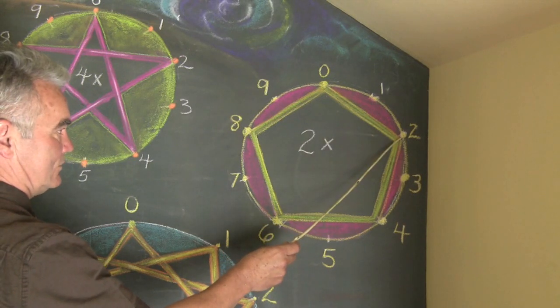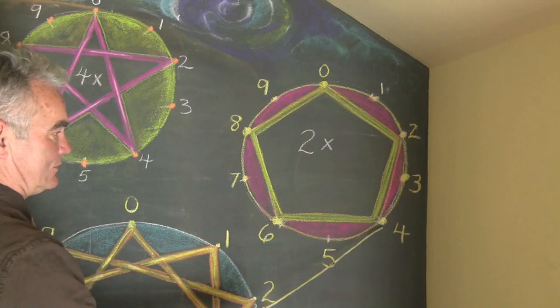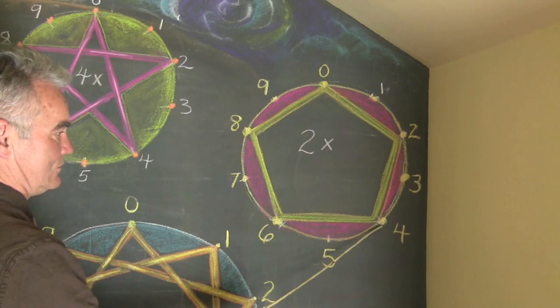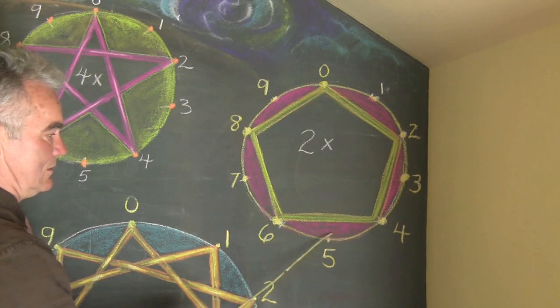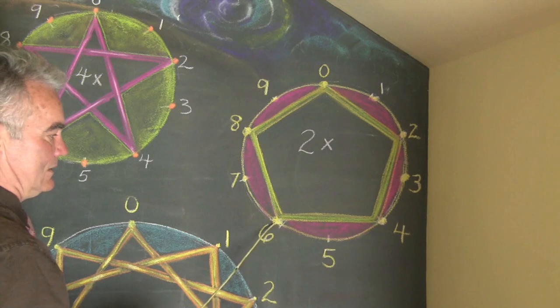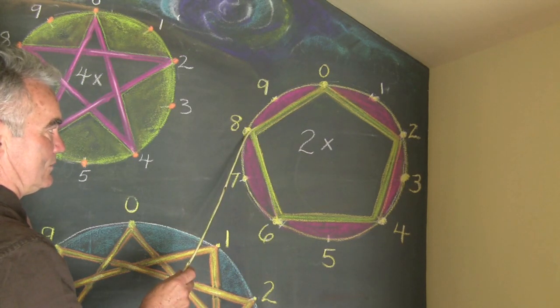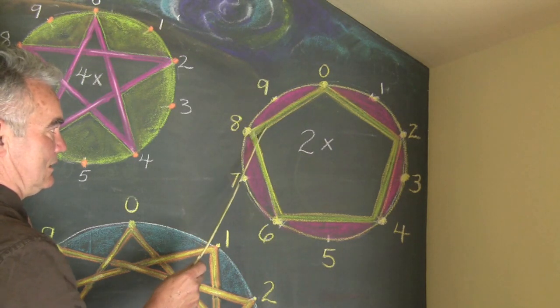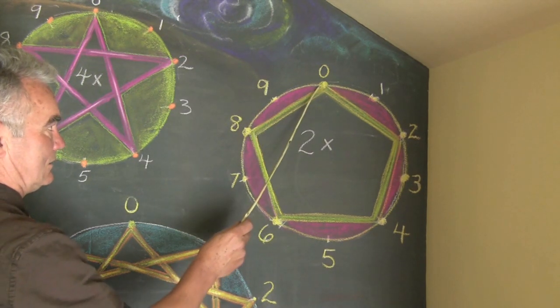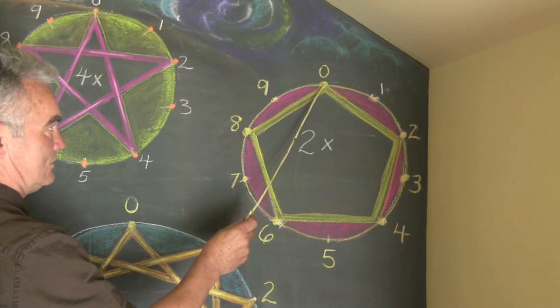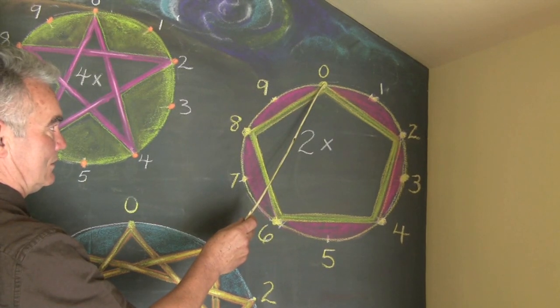Six times two is twelve, seven times two is fourteen, eight times two is sixteen, nine times two is eighteen, and ten times two is twenty.